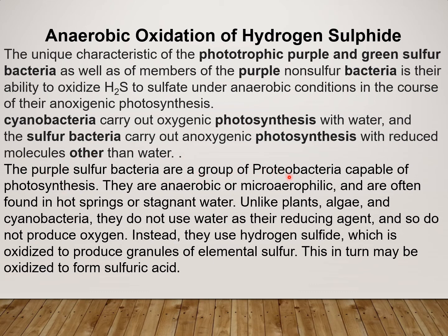The purple Sulphur bacteria are a group of Proteobacteria which are capable of photosynthesis. These bacteria are anaerobic or microaerophilic in nature and are mainly present in hot springs or stagnant water. Unlike plants, algae, and cyanobacteria, these bacteria do not use water as their reducing agent and therefore are not capable of producing oxygen during photosynthesis — because instead of water they use Hydrogen Sulphide. This Hydrogen Sulphide gets oxidized, producing granules of elemental Sulphur which may further get oxidized to form Sulphuric acid.